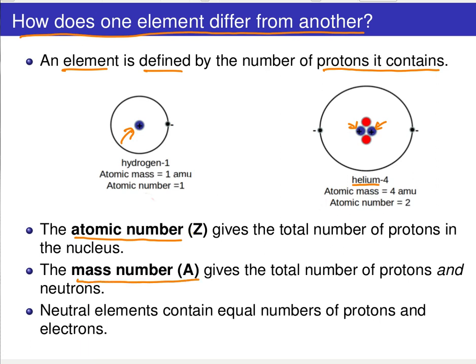So the atomic number Z essentially maps directly on to a specific atom type, hydrogen, helium, nitrogen, whatever you might have. Then the mass number, typically denoted by a capital A, gives the total number of both protons and neutrons. And if you have a neutral element, an electrically neutral element, then you will have an equal number of protons and electrons. And so if you look at our examples here of hydrogen and helium, we see that the hydrogen, which has a single proton, is electrically neutral because it also has just a single electron. The helium, which has an atomic number of two, two protons, also has two electrons and is therefore electrically neutral.